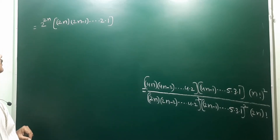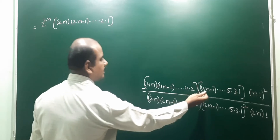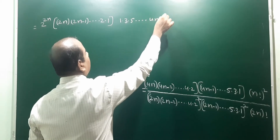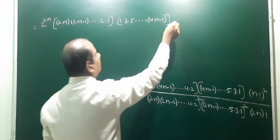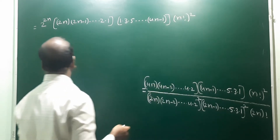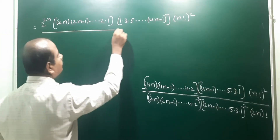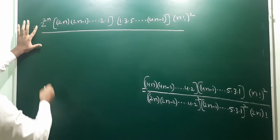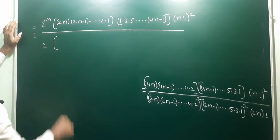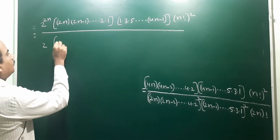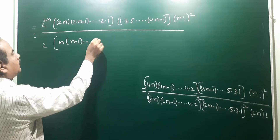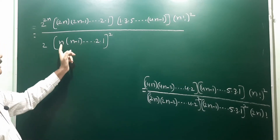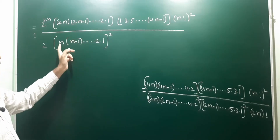After taking 2 common from all even terms: in the numerator we get 2^(2n) · (1·3·5···(4n-1)) · (n!)². In the denominator from (2n!)² we get 2^(2n) · (n!)² · (1·3·5···(2n-1))². So the 2^(2n) and (n!)² terms appear in both numerator and denominator.